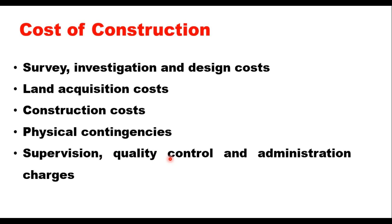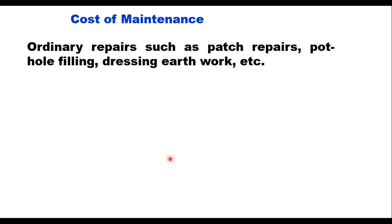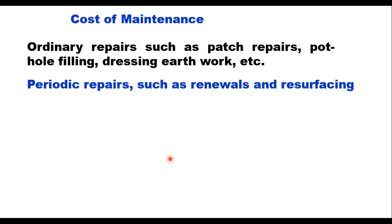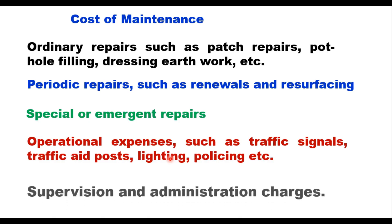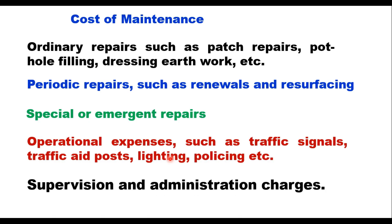The cost of maintenance is also composed of several components: ordinary repair such as patch repair, pothole filling, dressing earthwork, etc.; periodic repair such as overlays and resurfacing; special or emergent repairs required during its design life; operational expenses such as traffic signals, traffic aid posts, lighting, and policing; and supervision and administration charges.